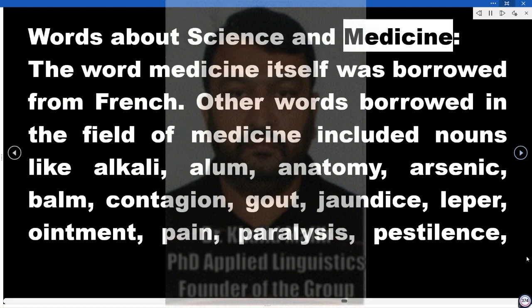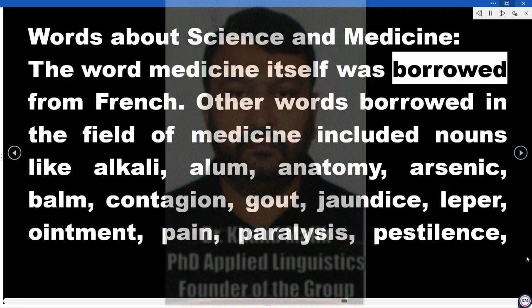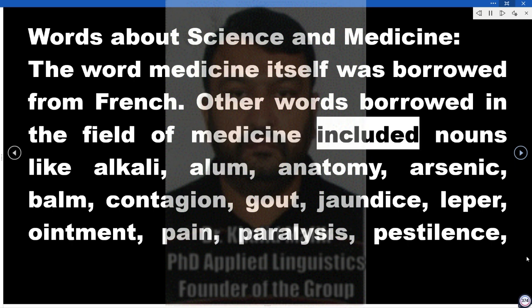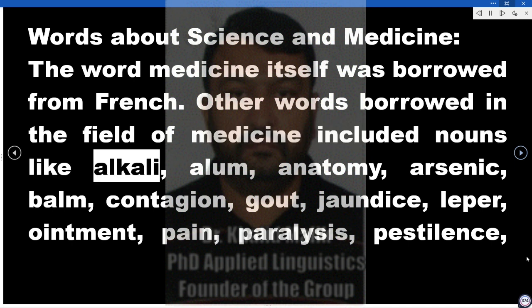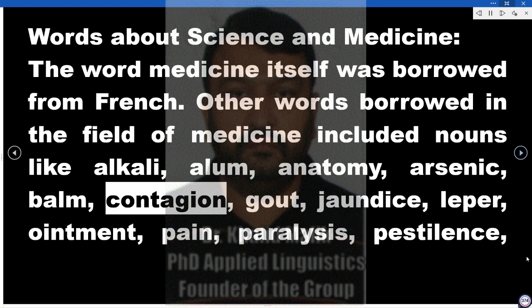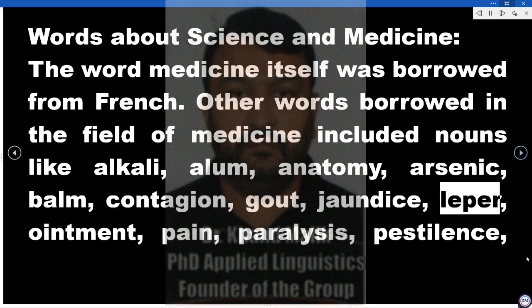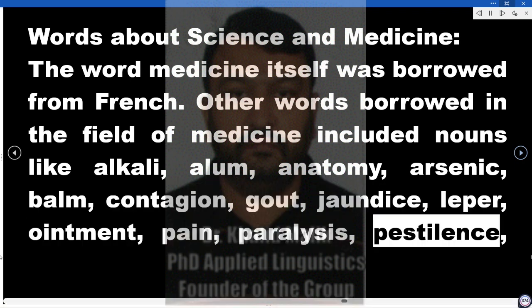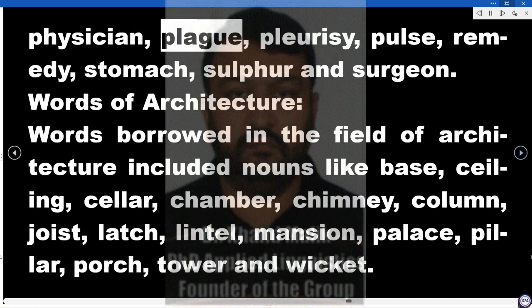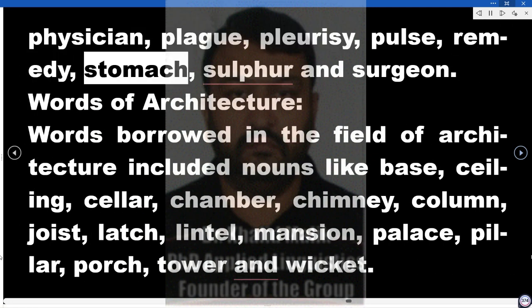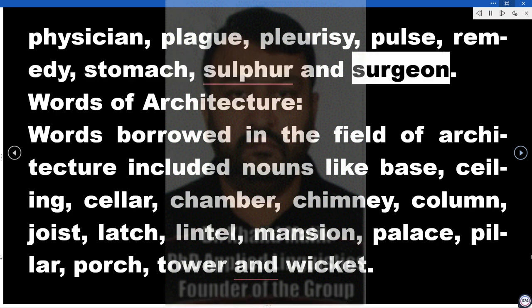Words about science and medicine. The word 'medicine' itself was borrowed from French. Other words borrowed in the field of medicine included nouns like alkali, alum, anatomy, arsenic, balm, contagion, gout, jaundice, leper, ointment, pain, paralysis, pestilence, physician, plague, pleurisy, pulse, remedy, stomach, sulfur, and surgeon.